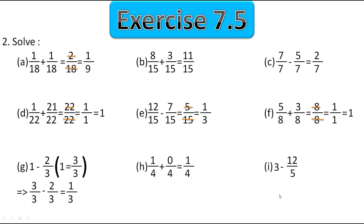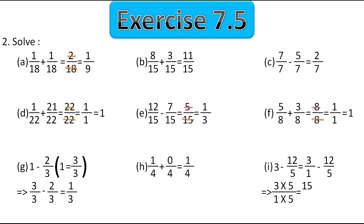The next one is different. We can't simply write 3 as 3 upon 3 — we need the denominator to be the same. We know that 3 can be written as 3 upon 1. So the question becomes 3 upon 1 minus 12 upon 5. Since the denominators are not the same, we convert by multiplying 3 upon 1 by 5 to get the denominator as 5: 3 times 5 is 15 upon 5. Now 15 upon 5 minus 12 upon 5, with the same denominator, gives 3 upon 5.